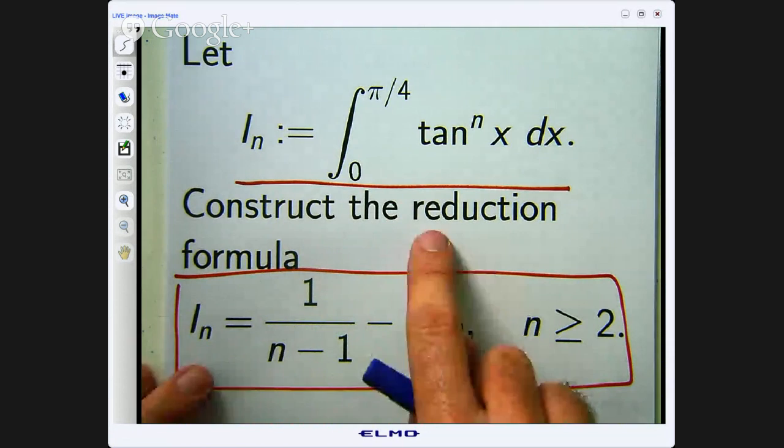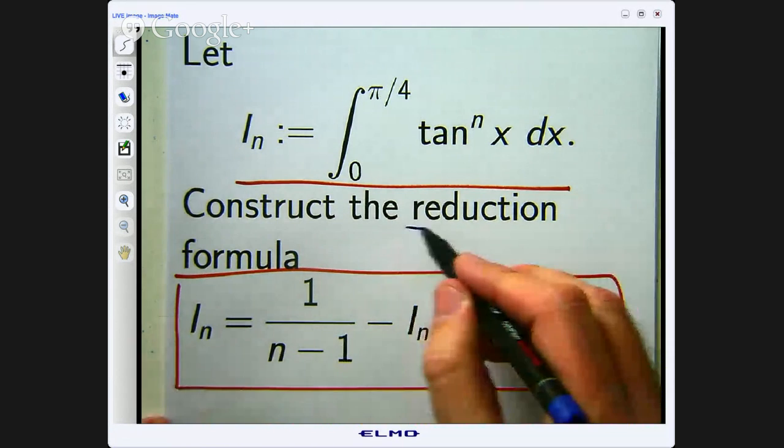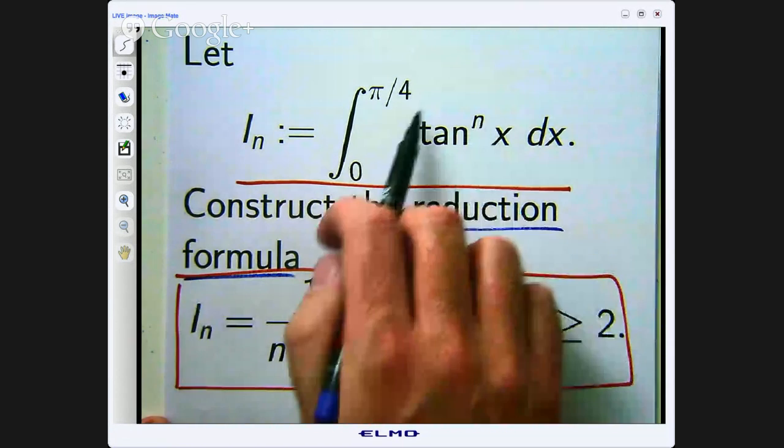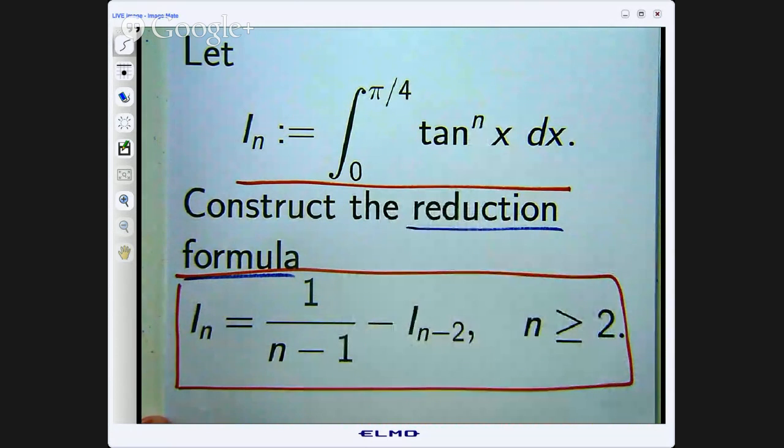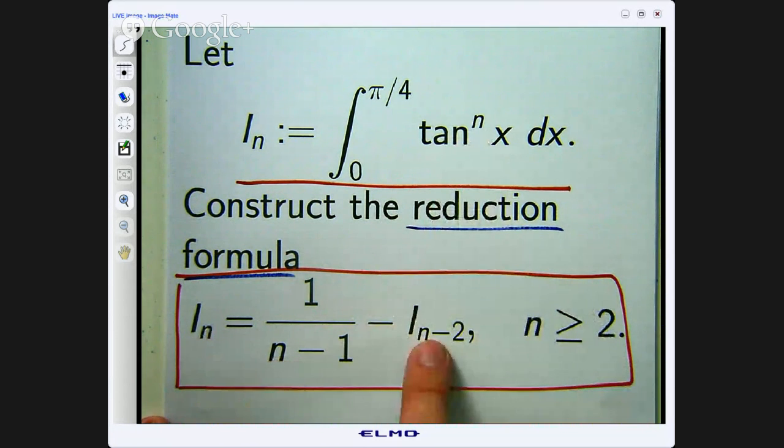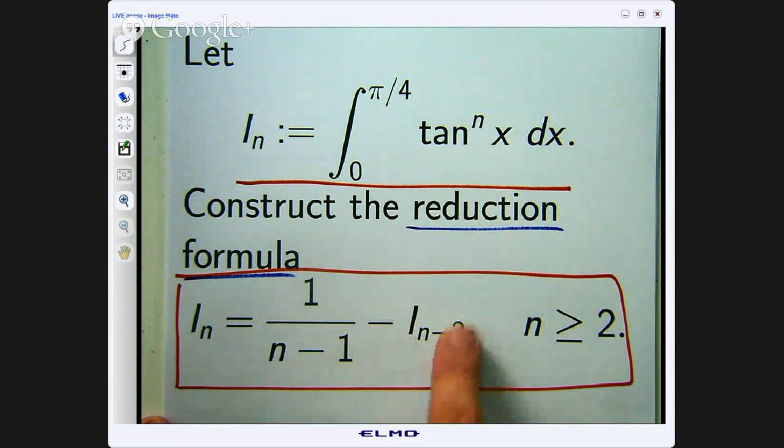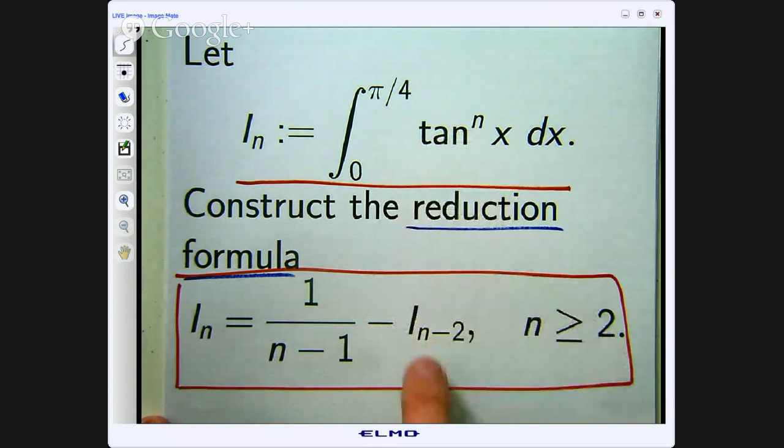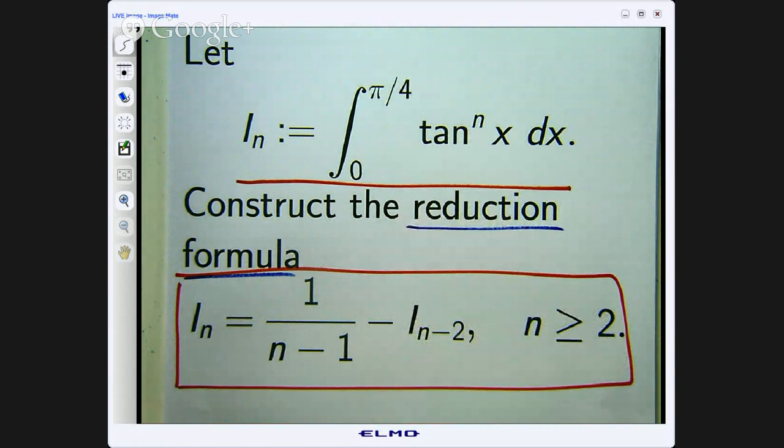It is called a reduction formula because you are reducing the values of n. So to compute I sub 3, this integral with tan cubed, you would put 3 in here and get I sub 1, which you can integrate directly. It is an iterative process.